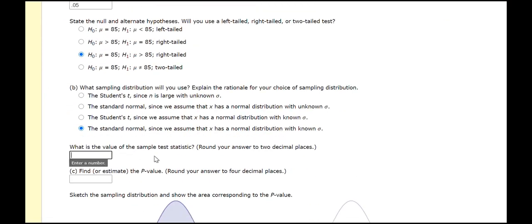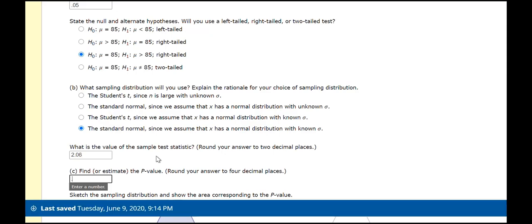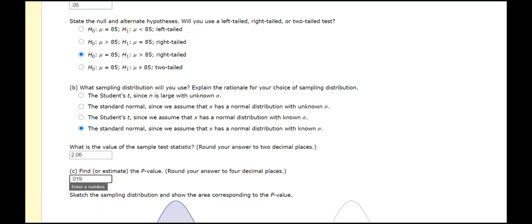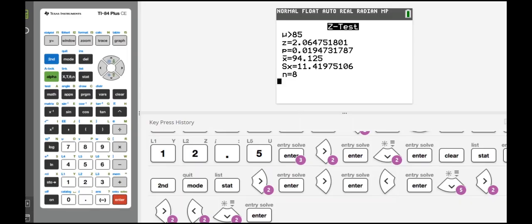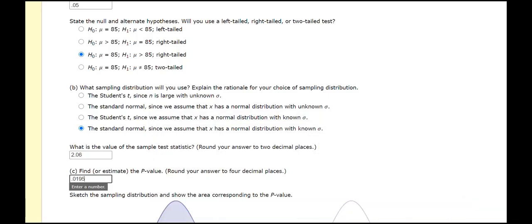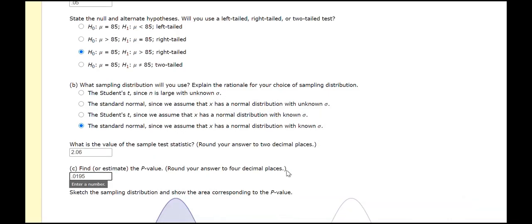And, let's go back to our problem. So, what is the value of the sample test statistic? So, that's 2.06 to two decimal places. And, what is the p-value to four decimal places? So, 0.019, 0.0195 to four decimal places.